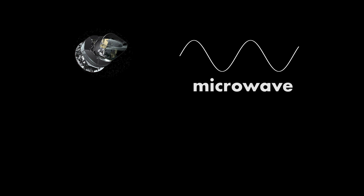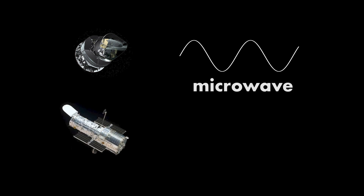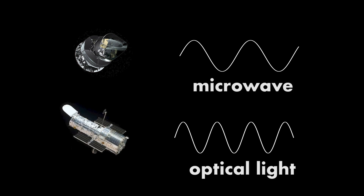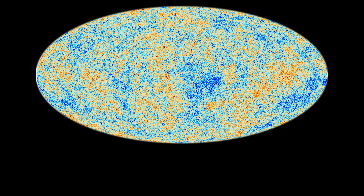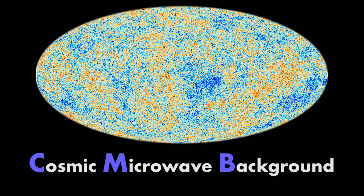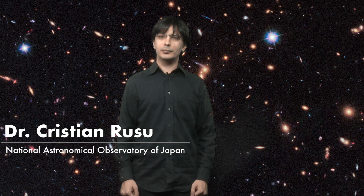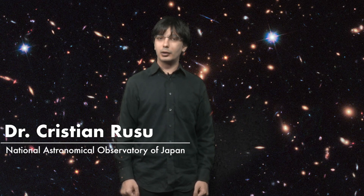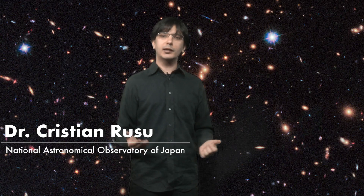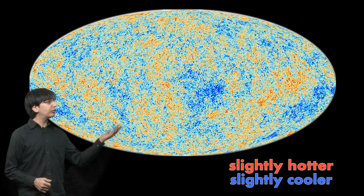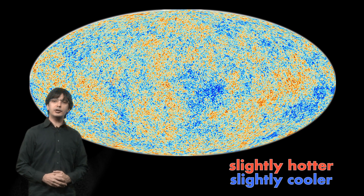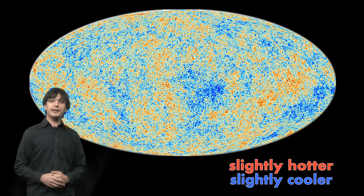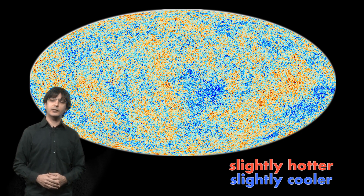Planck takes images of the sky in microwaves, similar to how the Hubble Space Telescope takes images in optical light. And this light from the early universe, which we call the Cosmic Microwave Background, or CMB for short, is what it observed. The CMB has a very uniform temperature, but when we measure it with very sensitive instruments, we see that it has several spots which are slightly hotter or slightly colder, as shown in this image with red and blue regions. This corresponds to regions of the early universe that had either slightly higher or slightly lower density compared to the typical density of the universe at the time.